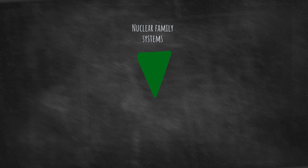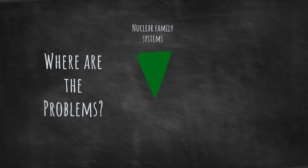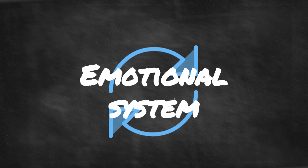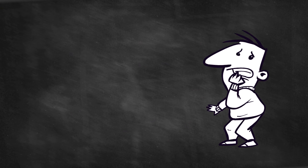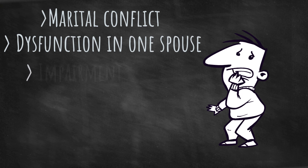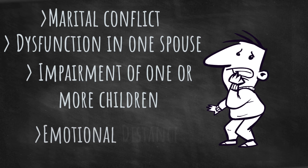The concept of the nuclear family emotional system describes four basic relationship patterns that govern where problems develop in the family. People's attitudes and beliefs about relationships play a role in the patterns, but the forces primarily driving them are part of the emotional system. The four basic relationship patterns are: marital conflict, dysfunction in one spouse, impairment of one or more children, and emotional distance.